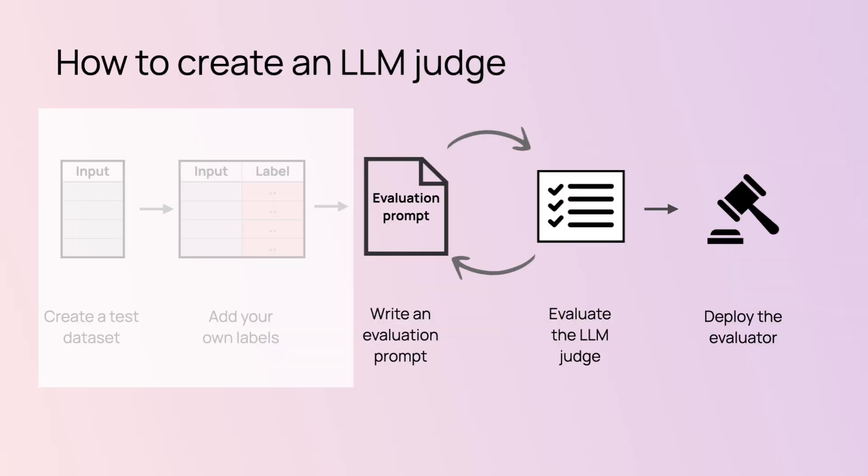You'll likely need to iterate a bit to get it right. And yes, it's a bit meta — your LLM evaluator needs its own evaluation. Of course, you can skip the labeling and just write the best prompt you can, then look at the results and maybe correct them. But I personally find that doing the labeling first is very helpful because it helps you clarify your own criteria, so you'll just end up writing better prompts.